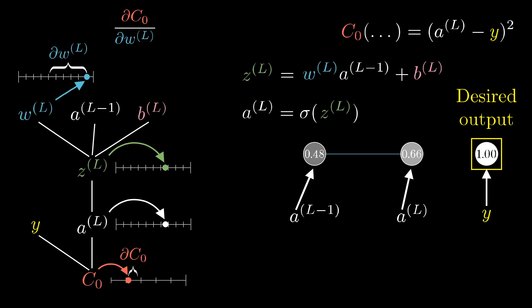Conceptually, this tiny nudge to w^l causes some nudge to z^l, which in turn causes some nudge to a^l, which directly influences the cost. So we break things up by first looking at the ratio of a tiny change to z^l to this tiny change w.